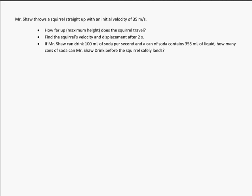Let's take a look at this problem. Mr. Shaw throws a squirrel straight up with an initial velocity of 35 meters per second. This is the problem from the board today that is going to be something similar to what's on your quiz on Tuesday. Quiz Tuesday. So Mr. Shaw throws a squirrel straight up with an initial velocity of 35 meters per second.